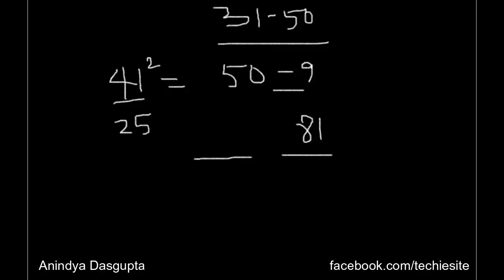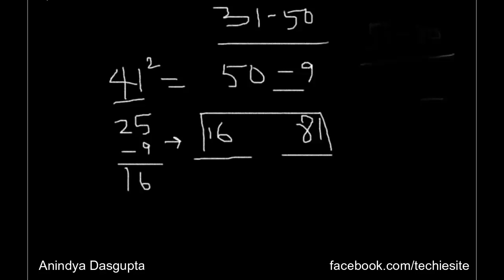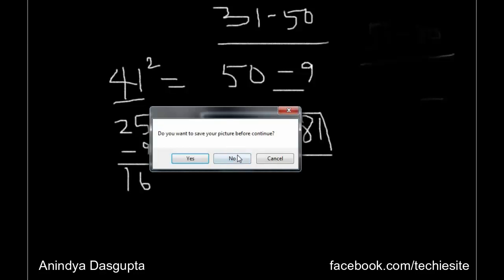The first two digits can be found by taking 25 and subtracting this same number with its sign: 25 minus 9 equals 16. So for numbers between 31 to 50, 25 is the base for the first two digits and 50 is the base for the last two digits. Therefore, 41 squared is 1681.